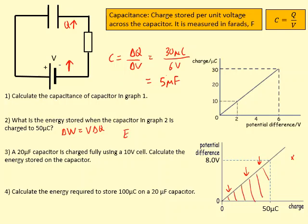So it needs to be a half. The equation for the energy stored — I'm going to use E, please don't get mixed up with electric field strength — it's going to be E = ½QV. So in this case it's going to be 0.5 times 50×10⁻⁶ times 8 volts, which gives me 2×10⁻⁴ joules.